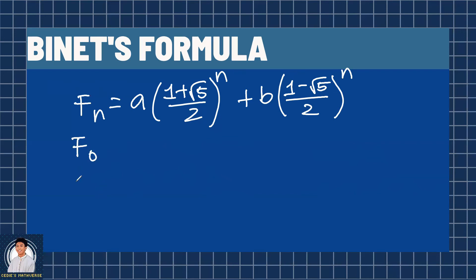To make things easier, we will use f sub 0 and f sub 1 to easily solve for a and b. So f sub 0, a times any number raised to 0 is 1, a times 1 is a. Then the same thing goes for b. And we know that f sub 0 equals 0. So we have this equation: a plus b equals 0 or b equals negative a.